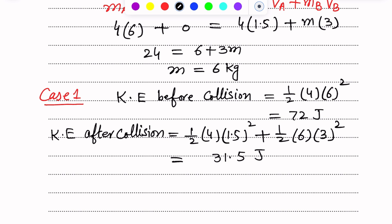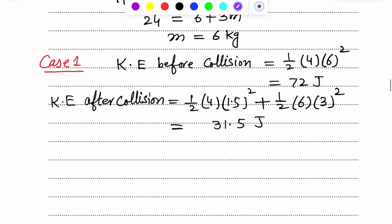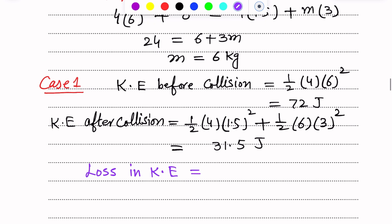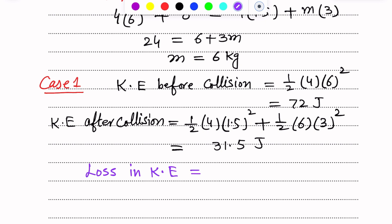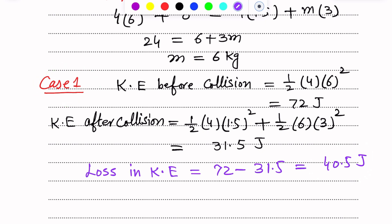Loss in kinetic energy due to collision equals kinetic energy before collision minus kinetic energy after collision: 72 − 31.5 = 40.5 joules. This is the loss of kinetic energy for Case 1. Now, Case 2.